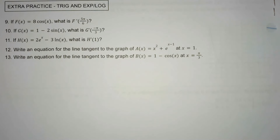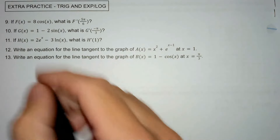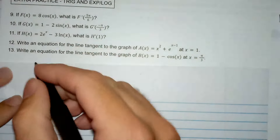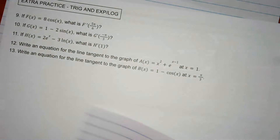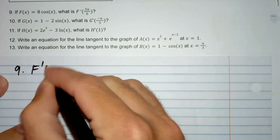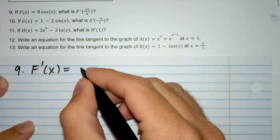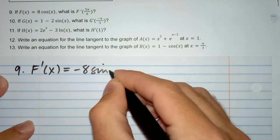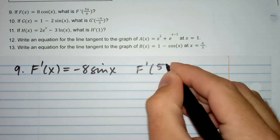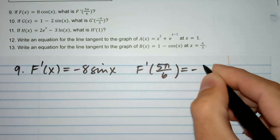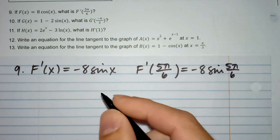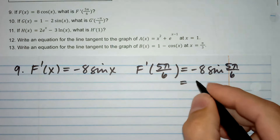For number 9, f'(x) is going to equal 8 times the derivative of cosine, which is negative 8 sine x. Then f'(5π/6) equals negative 8 times sine of 5π/6. Sine of 5π/6 is a half, so negative 8 times a half is negative 4.